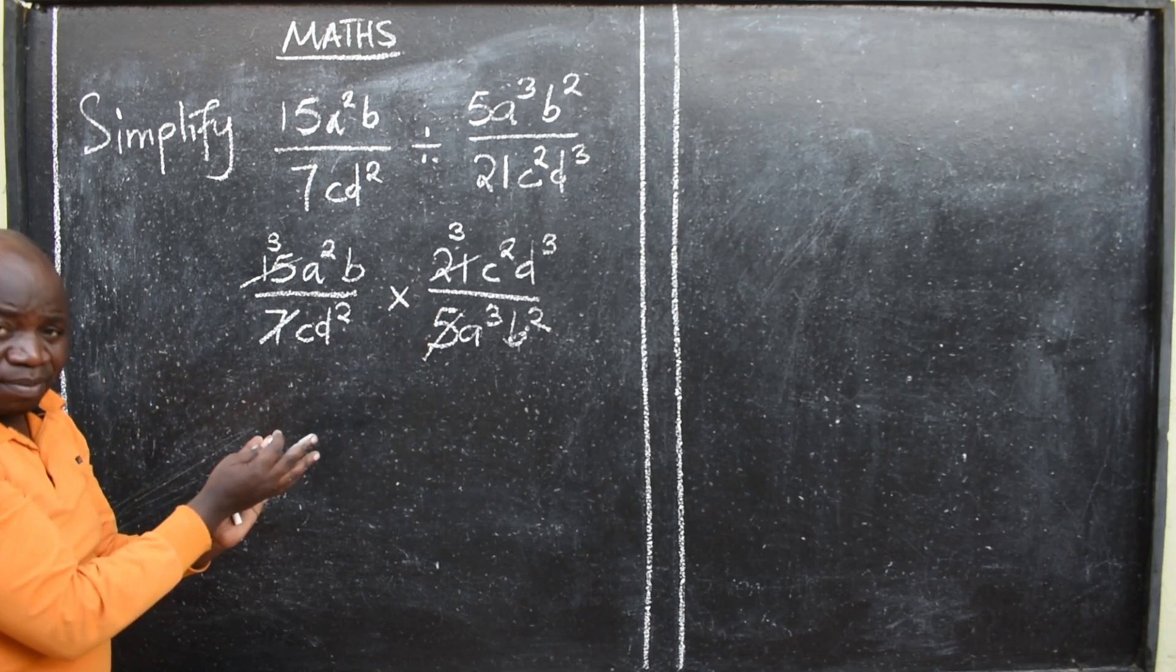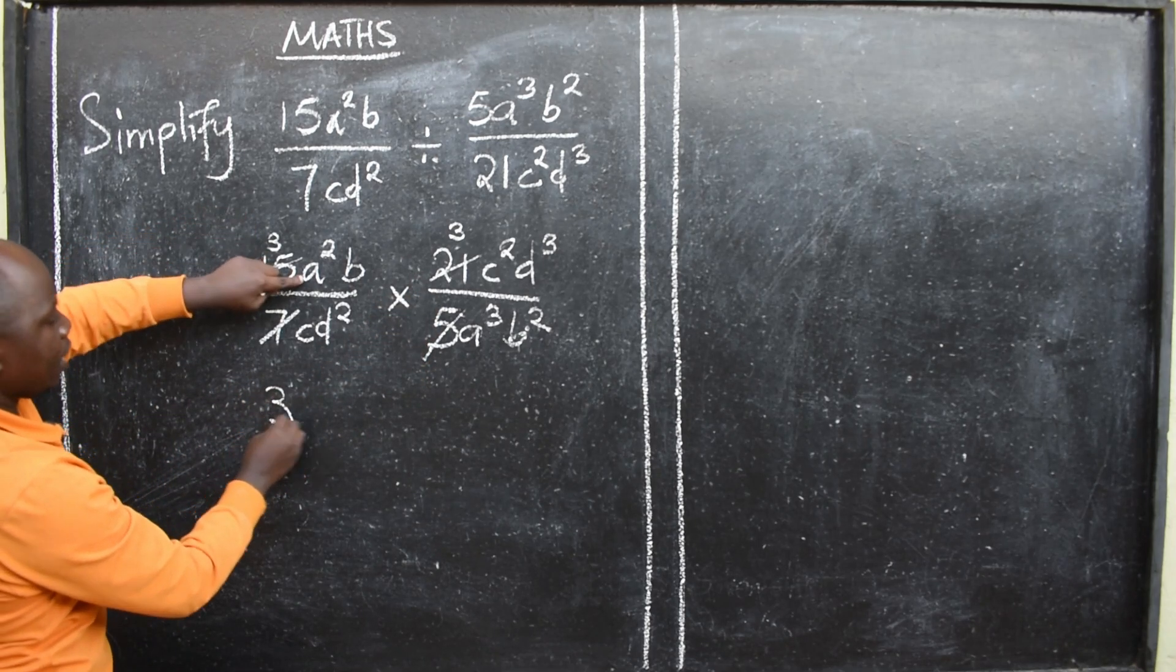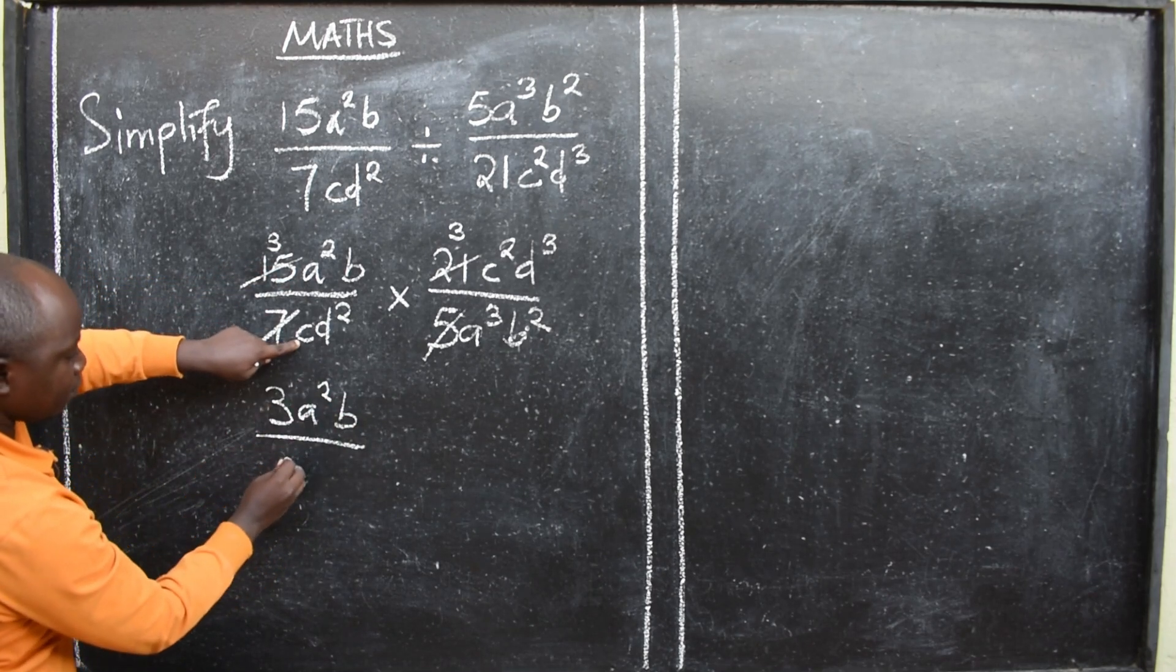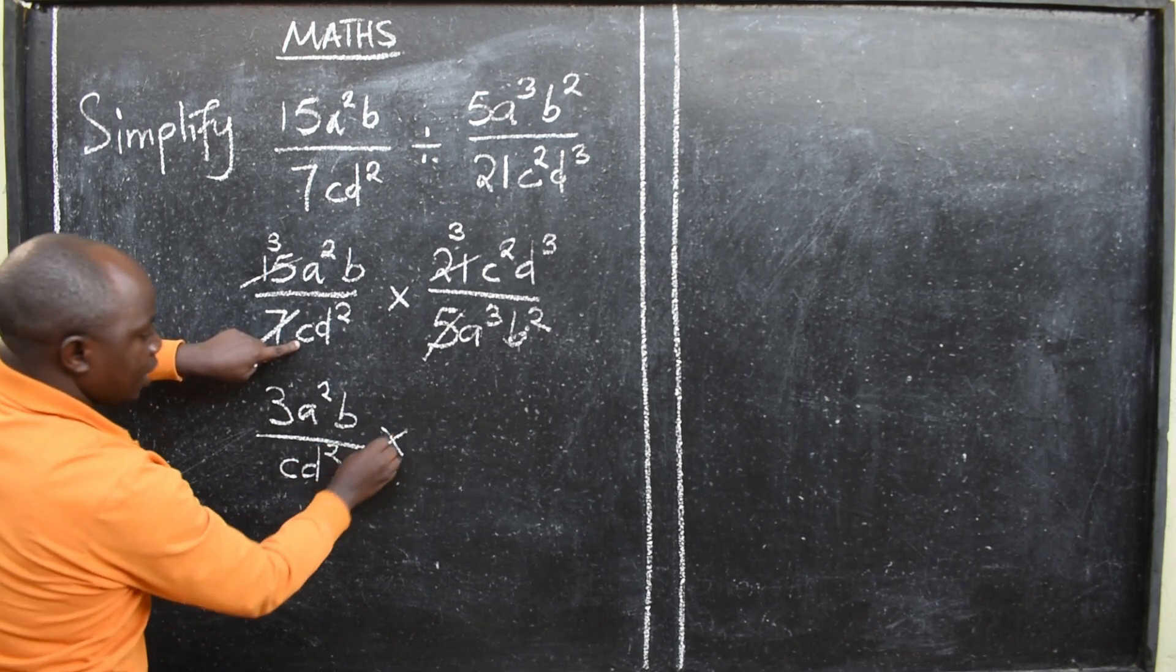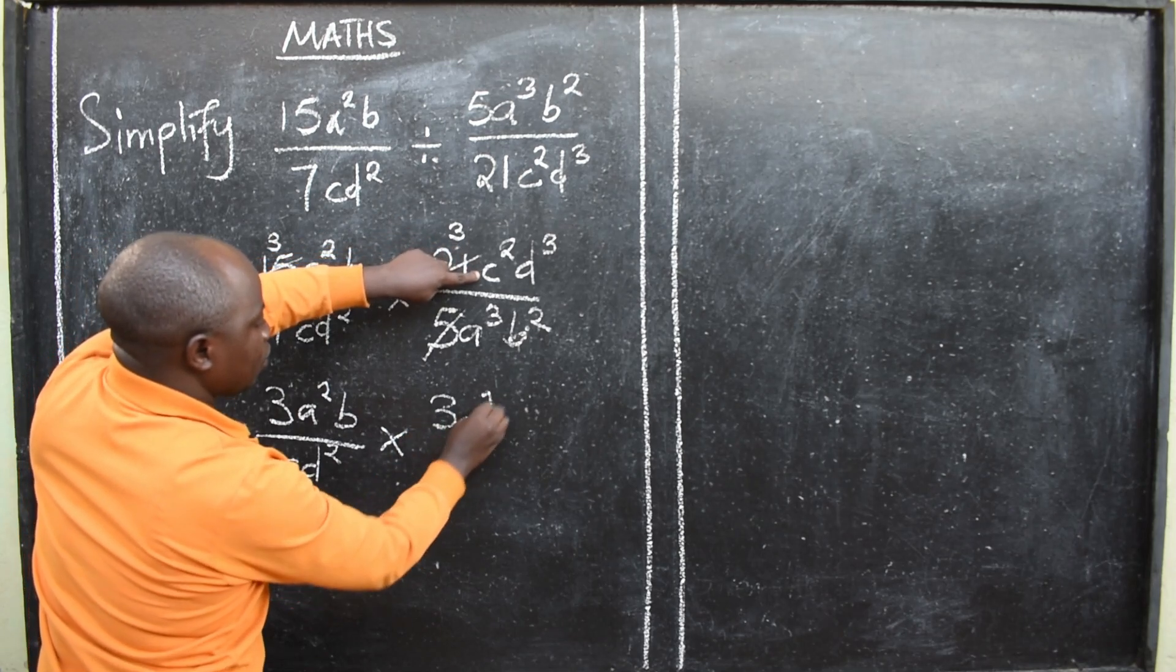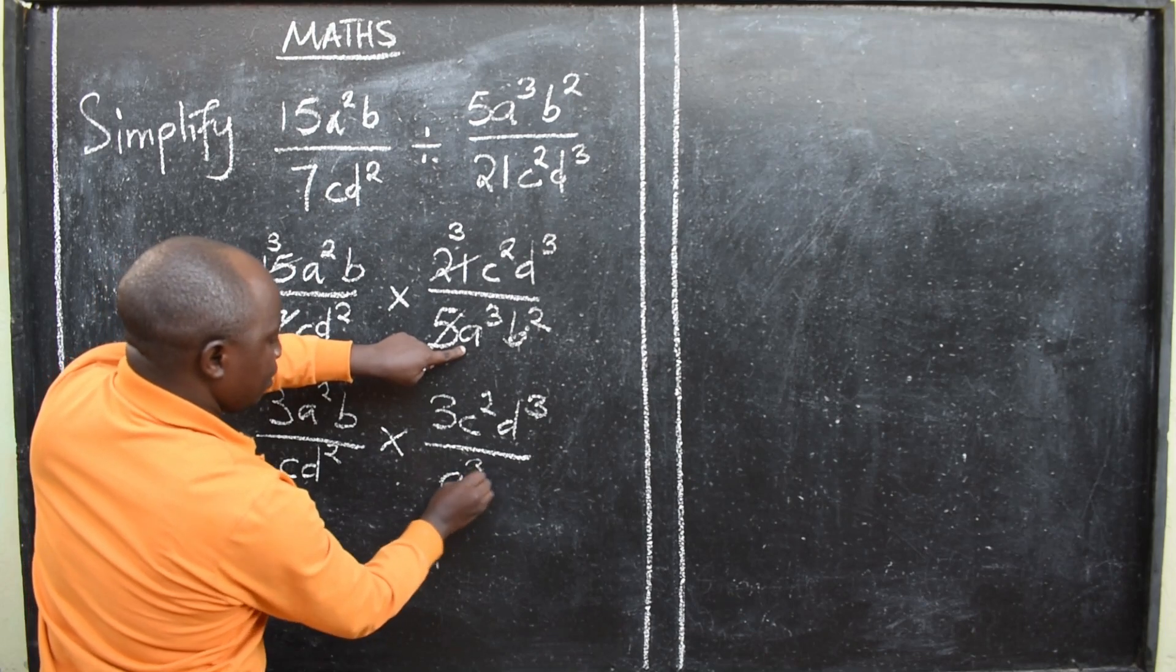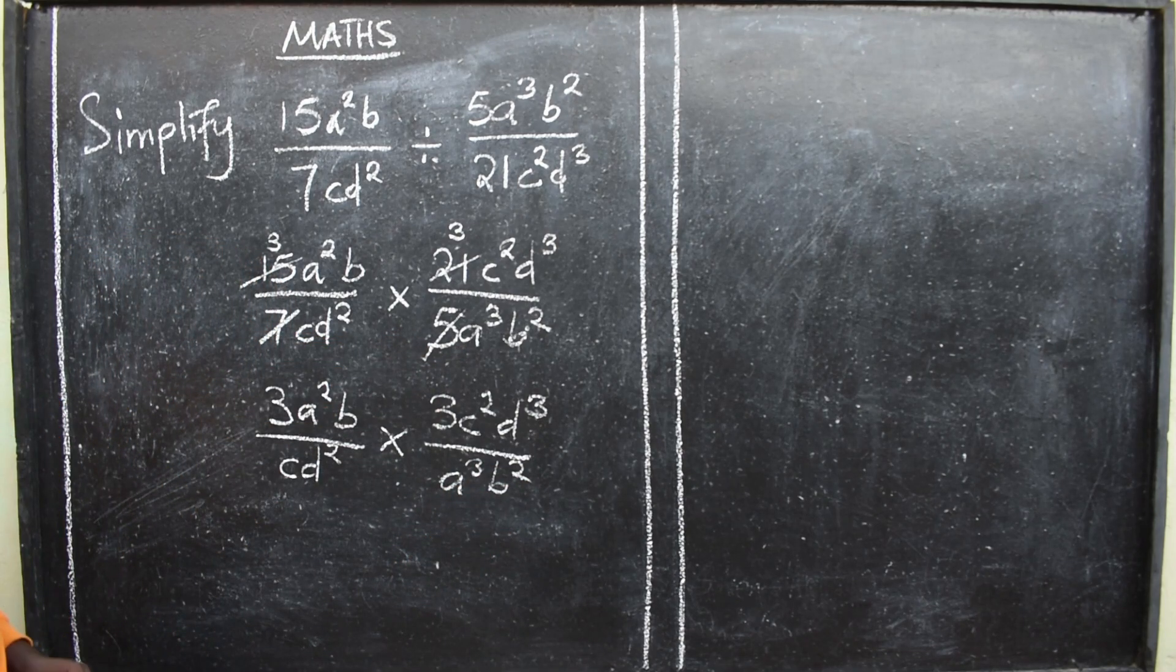I can write what has remained. So here, I have 3a² b over c d², times this side. I have 3c² d³ over a³ b².